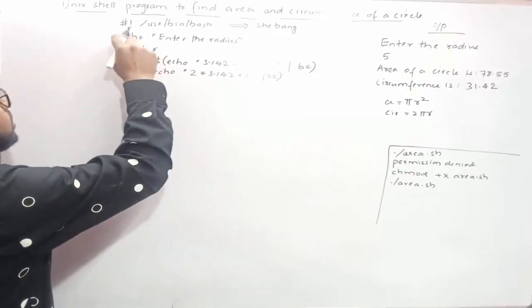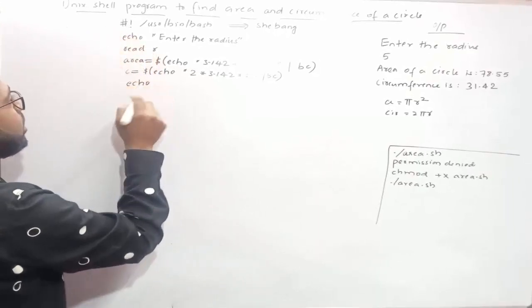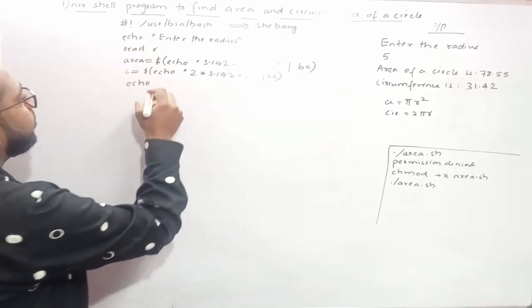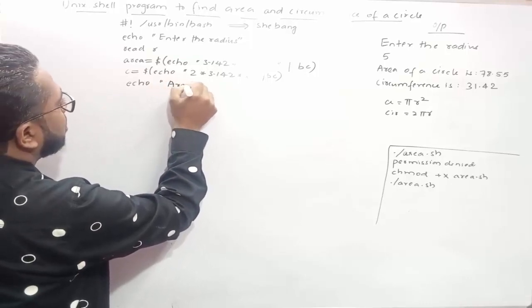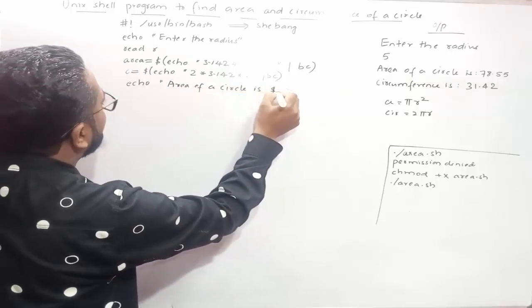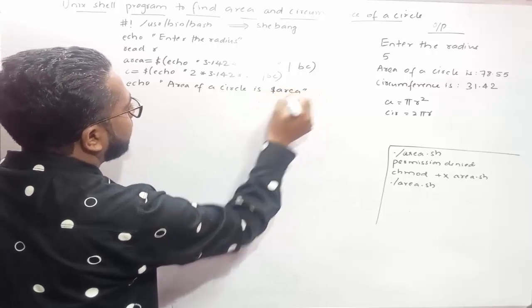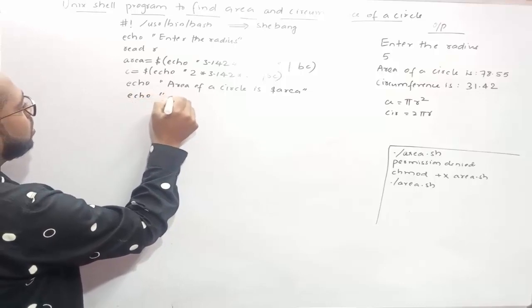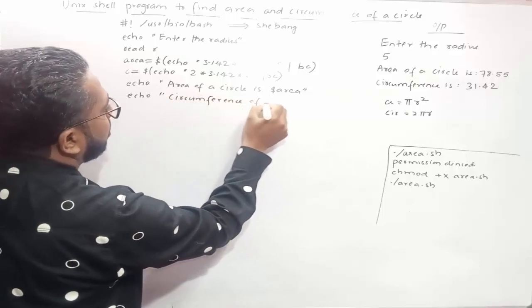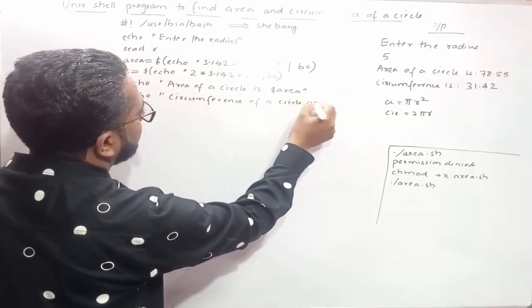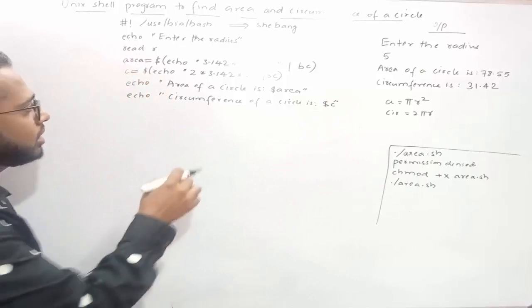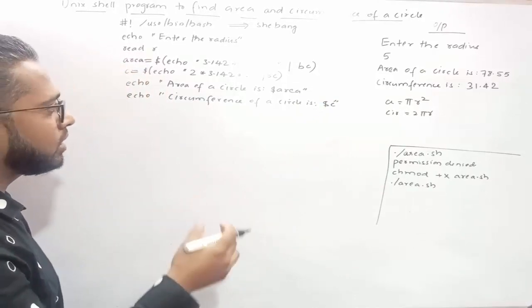Now we just need to print the results. We use the echo command again — it's used to display messages on the terminal as well as to print output. So we write: echo "Area of a circle is $area" and echo "Circumference of a circle is $c".